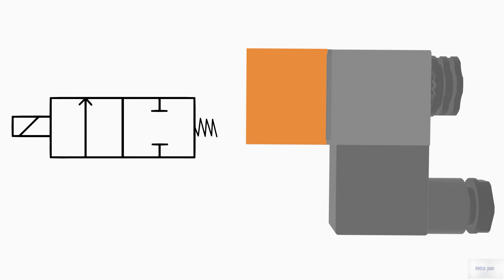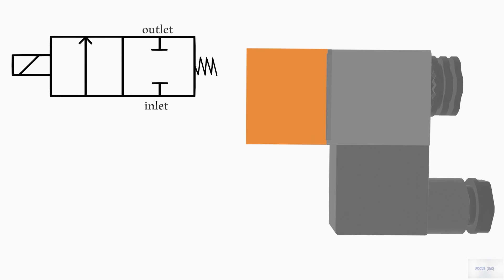Two-way solenoid valves have two ports, the inlet and outlet ports. Typically, a two-way valve has two states, normally closed and normally open.